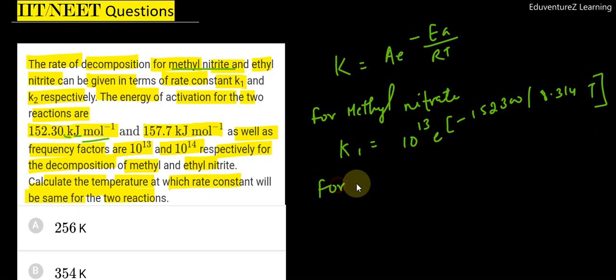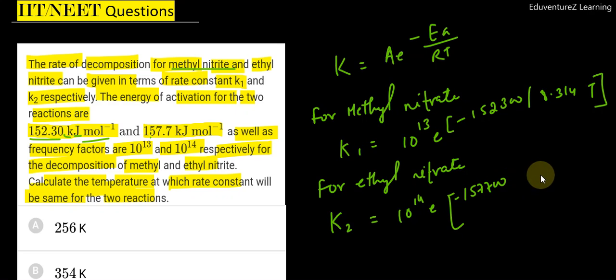And for ethyl nitrate, we will use this value. So if we break this value, we can write this in another form, or write this value together as 10 to the power 14 E to the power minus 157700 by 8.314 and temperature T.